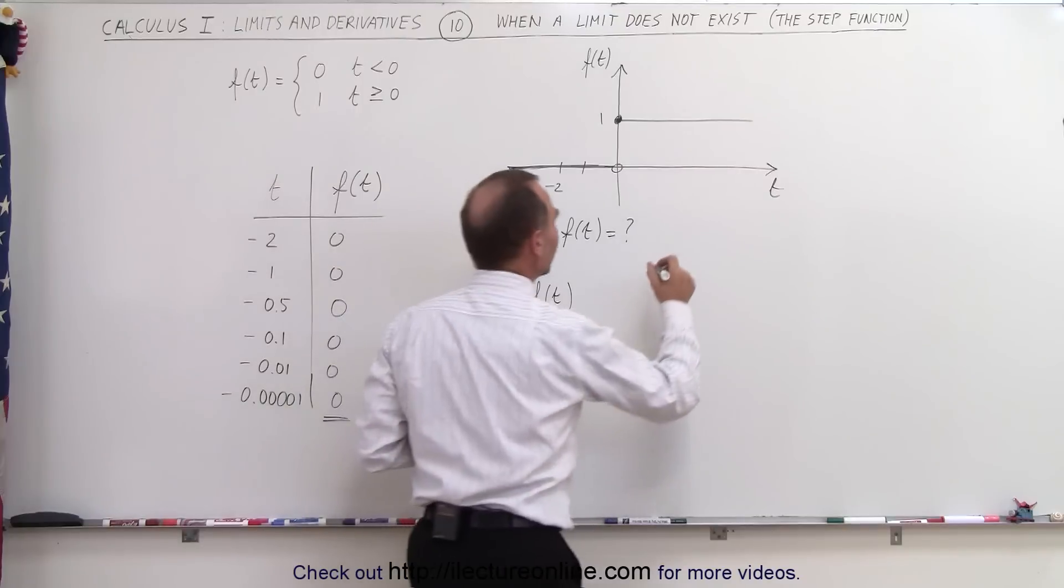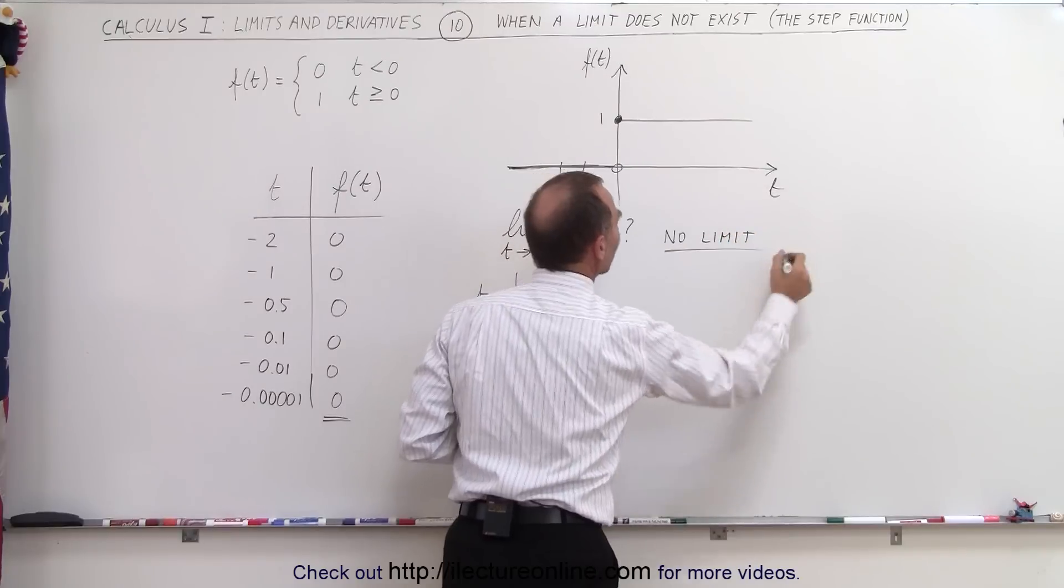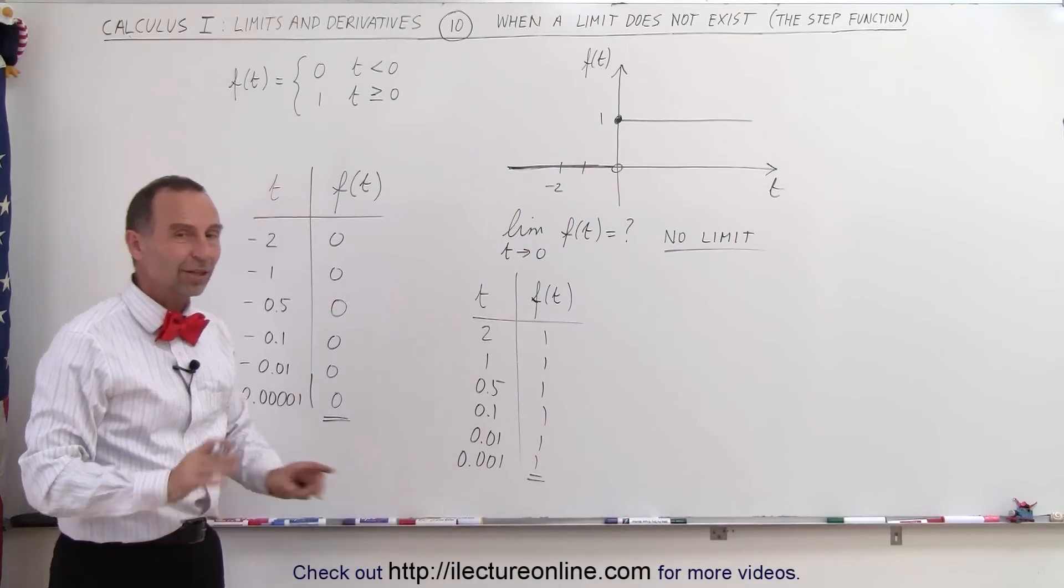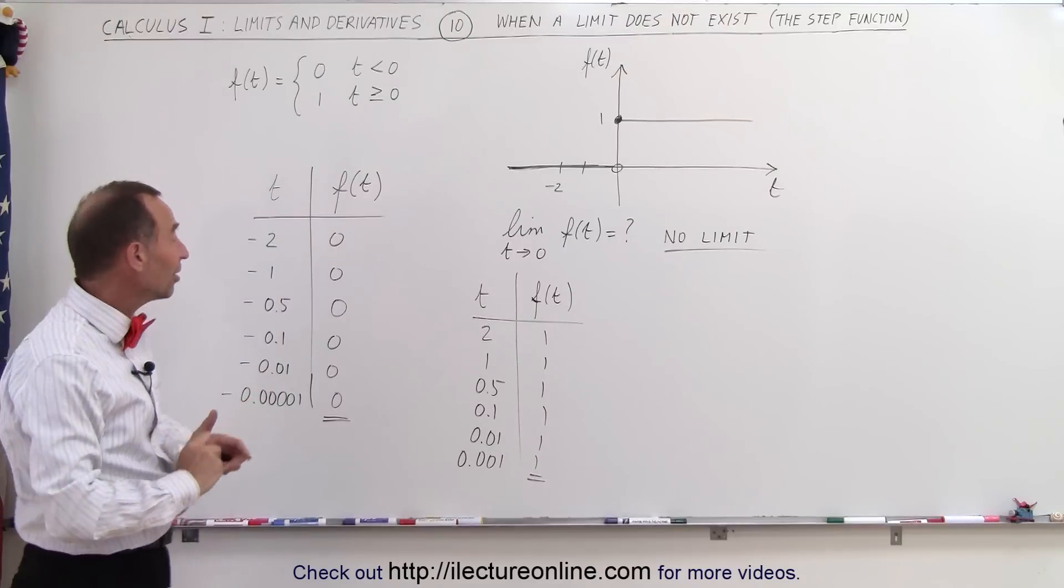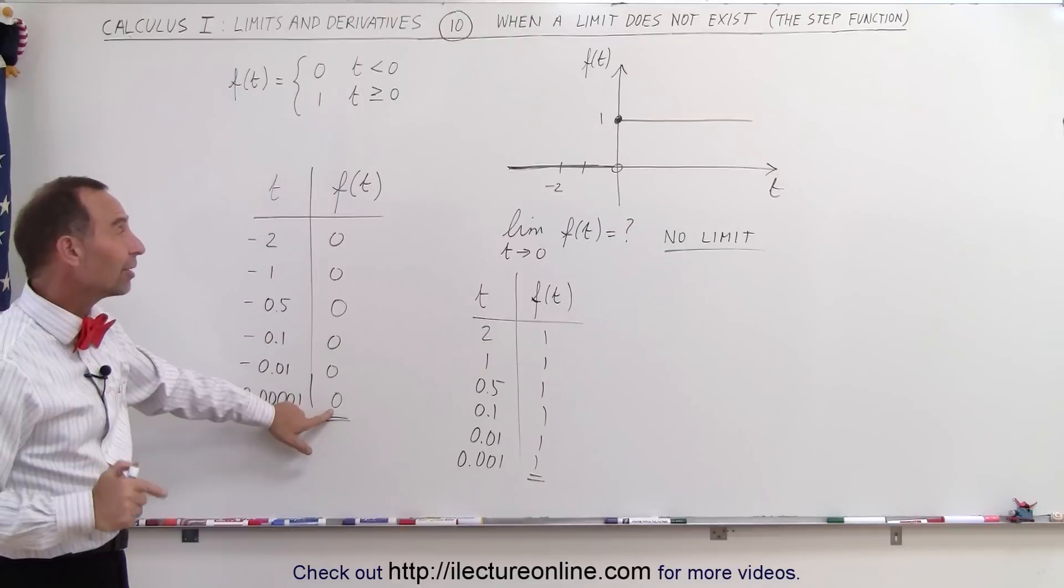And obviously you can see that as we approach 0 using this technique, we certainly don't find the value when we plug in the value outright. When we plug in t equals 0, we get the value 1 for the function. That does not appear to be the case when we use this technique.